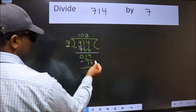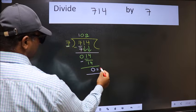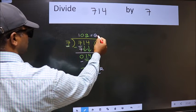No more numbers to bring down. So we stop here. This is our remainder and this is our quotient.